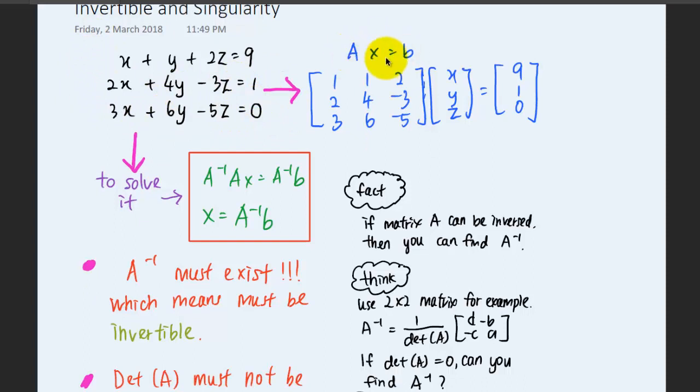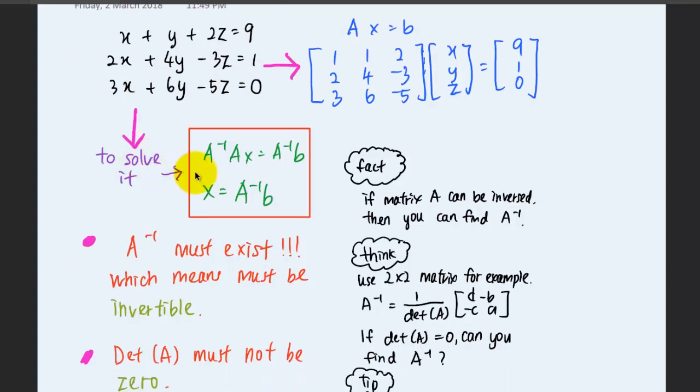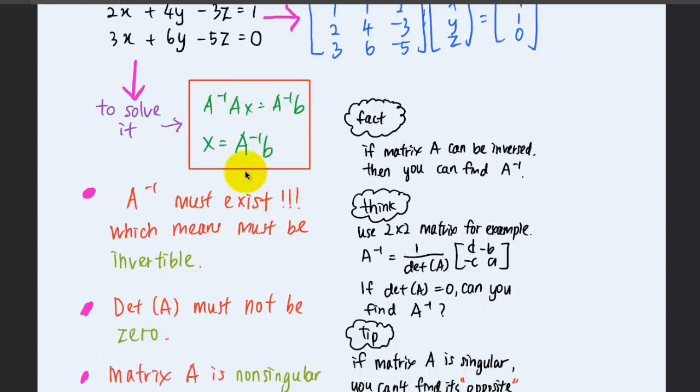Based on these equations, you can solve to get the values for the unknowns x, y, z by multiplying the inverse of A on both sides of the equations, which is A inverse times Ax equals A inverse times b. To get x, we need to get the inverse of A. If a matrix A can be inverse, which means you can inverse the matrix, we can find A inverse.